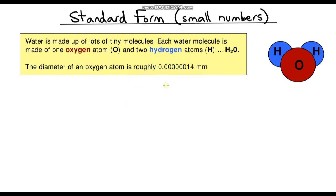Some examples involve atoms and molecules — they're extremely small, not visible to the eye, so we have very small numbers when measuring these things. I've got a nice example to start with: a water molecule, made up of one oxygen atom and two hydrogen atoms. This is not a science lesson, but I just want to illustrate the point.